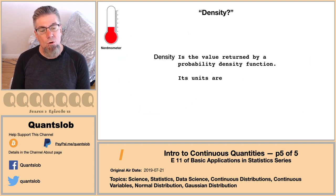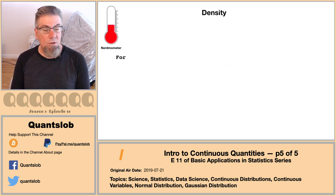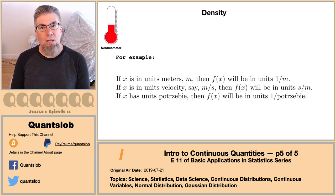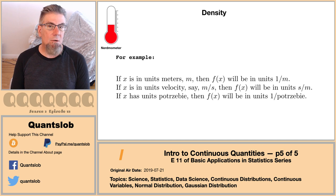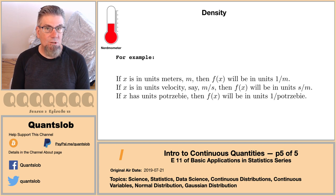It turns out that density takes on units that are the inverse of the unit of the quantity or random variable. For example, if our quantity is in units of meters, then its density will be in units of one over meters or units per meter. If our quantity is in units of meters per second — like a velocity — then its density will be in units of seconds per meter. If you happen to get the reference in that third example, I tip my hat to you.